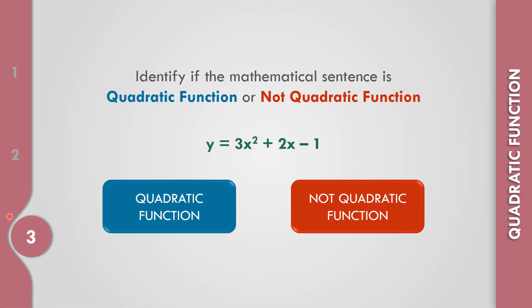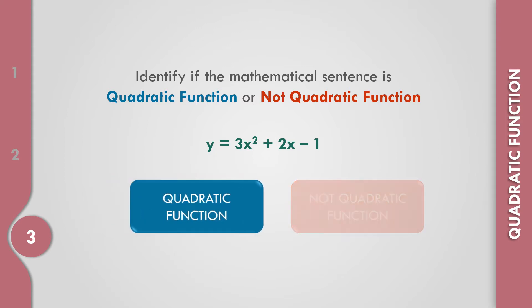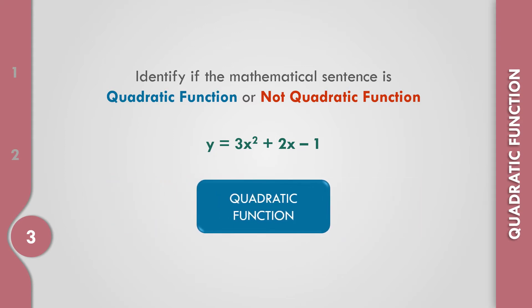How about example number 3? We have y equals 3x squared plus 2x minus 1. The highest degree is 2, and we have the value of y, so this is a quadratic function.